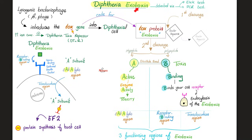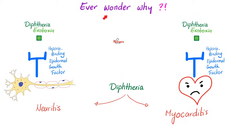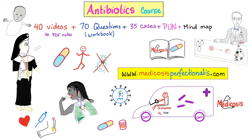This is how diphtheria exotoxin is so toxic. Have you ever wondered why diphtheria causes myocarditis and neuritis? It's because the heparin binding epidermal growth factor receptor — the diphtheria toxin receptor — is present on your neurons and on your myocardium. Medicine makes so much sense once you understand what you're talking about.